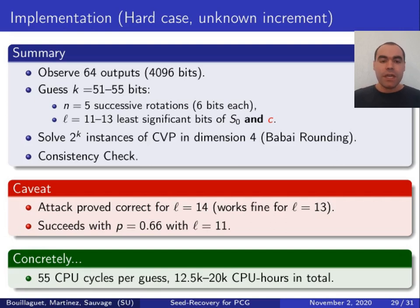And for each guess, we have to solve an instance of the closest vector problem in dimension 4, which we still do by rounding, then perform the consistency check. That's the bulk of the computation. We have proved that the attack is correct if we guess 14 least significant bits. But in practice, it works fine with only 13, and it works with probability 66% if we guess only 11 bits.